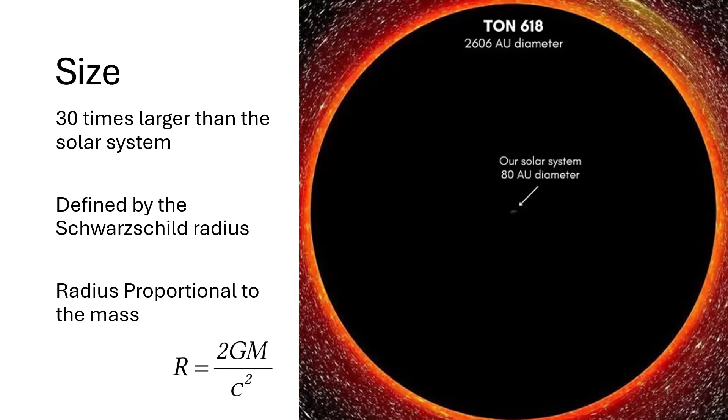The known size of our solar system goes out to around the orbit of the Kuiper belt, so the radius would be about 40 AU, the diameter 80 AU. So this is hugely bigger, 30 times the size of our solar system.